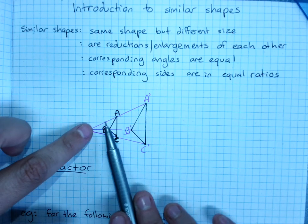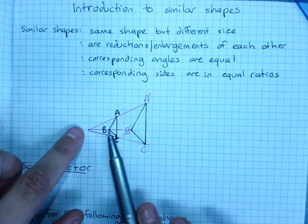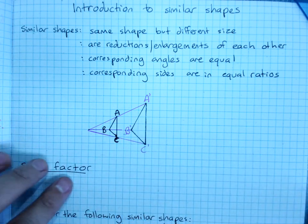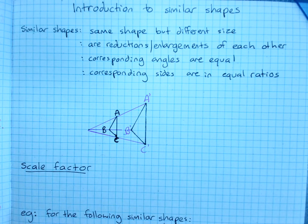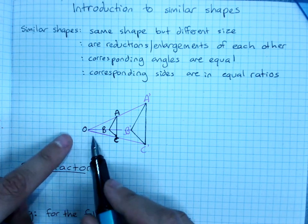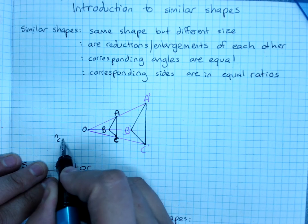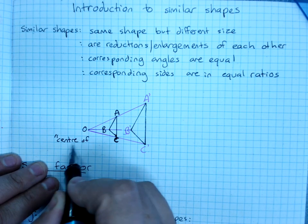But every so often, you can see how the enlargement happened because it all comes back to one particular point. So you can see based on this enlargement that point A became point A prime, point B became point B prime and so on. So this point here, if we can see that point in a diagram, O, the origin, is the center of enlargement.